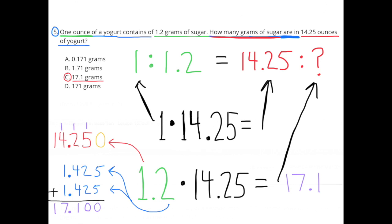Number 5. 1 ounce of yogurt contains 1.2 grams of sugar. How many grams of sugar are in 14.25 ounces of yogurt? Well, the ratio is 1 ounce of yogurt to 1.2 grams of sugar. So, if you were to change that 1 ounce of yogurt into 14.25 ounces of yogurt, that means you'd be multiplying that 1 times 14.25. Now we need to multiply the 1.2 by 14.25.